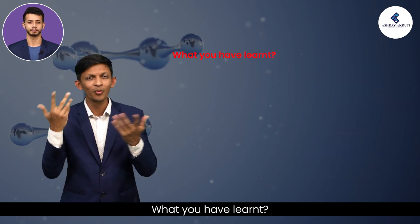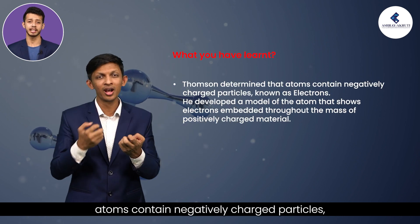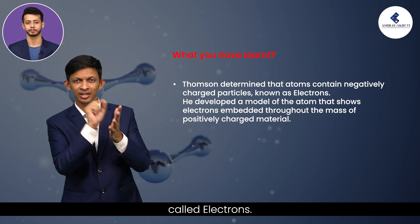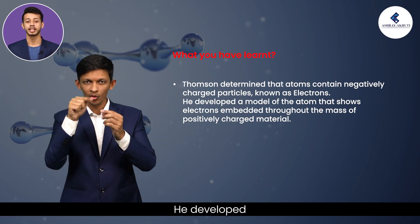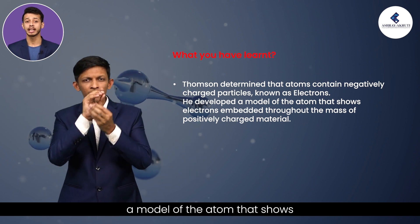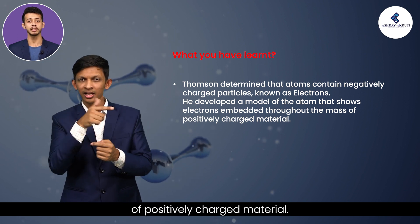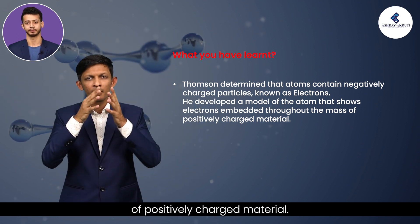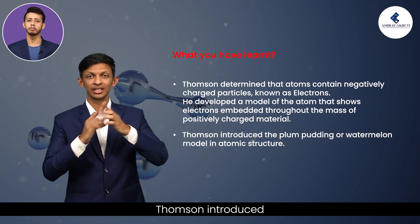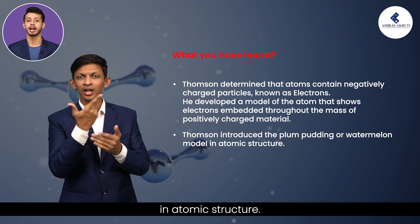What have you learnt? Thomson determined that atoms contain negatively charged particles called electrons. He developed a model of the atom that shows electrons embedded throughout the mass of positively charged material. Thomson introduced plum pudding or watermelon model of atomic structure.